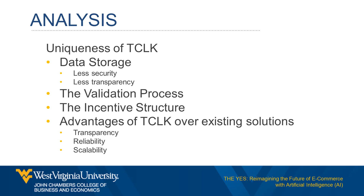There are three weaknesses of existing solutions that TCLK addresses. First, transparency: TCLK's data storage uses blockchain, which is immutable, providing confidence that data cannot be tampered with by an administrator. Second, reliability: TCLK facilitates multiple users — three to ten — validating submissions to maintain data integrity. Third, scalability: content is managed by volunteers, meaning minimal additional resources are required from the application to scale up. Further, volunteers are rewarded with digital tokens, incentivizing users to continue supporting the platform.